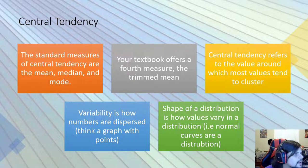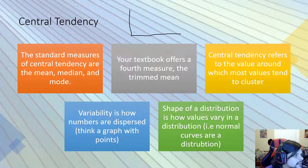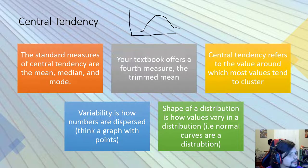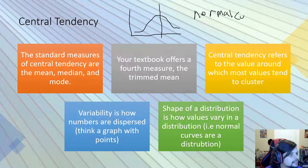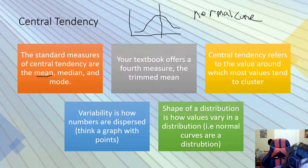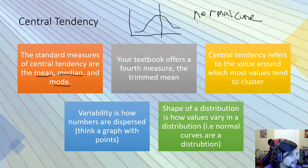I want to draw out what the normal curve looks like. Imagine this is completely symmetrical and not lopsided, and I'm going to draw a line down the middle. This is what you call the normal curve. Normal curves occur when your mean, your median, and your mode all are the same number — that's very important to know.